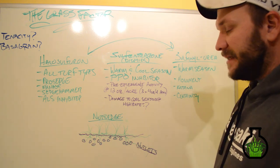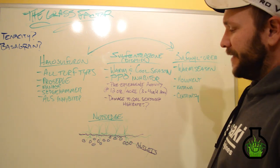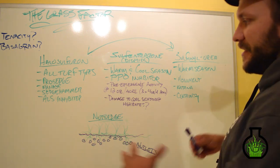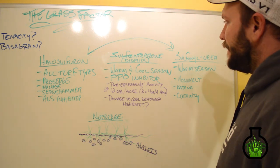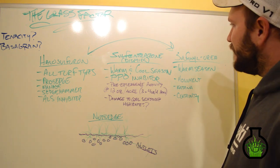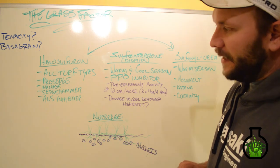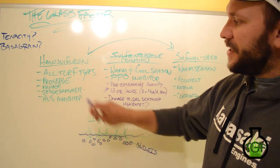So hand removal isn't really a feasible option when it comes to nutsedge. It's probably best to go about it chemically. So when it comes to chemically controlling nutsedge, there's several different options on the market. But probably the three most popular that we're going to be talking about will be one, halosulfuron, also known as sedge hammer.